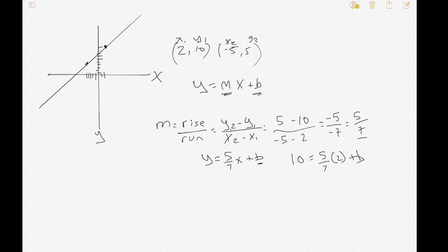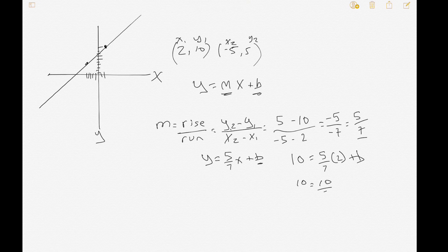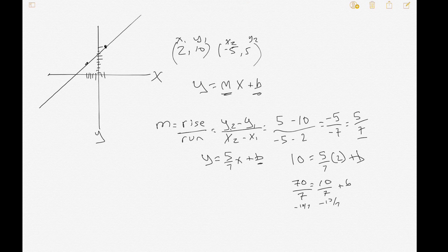So we get 10 equals 10/7 plus b. Make a common denominator which would be 7. So 10 is like 70/7. So 70/7 equals 10/7 plus b. Subtract 10/7 from each side, so we would get 60/7 equals b.